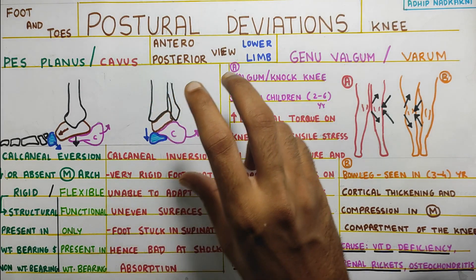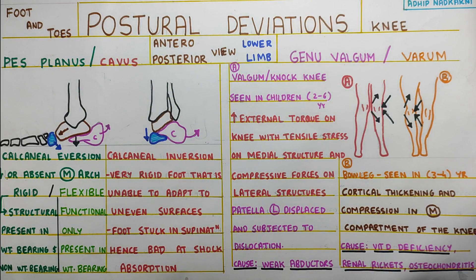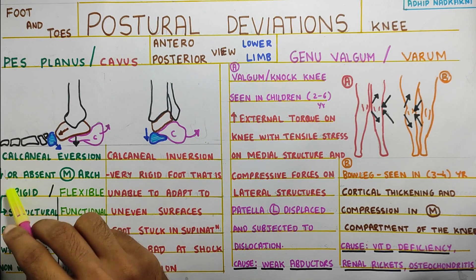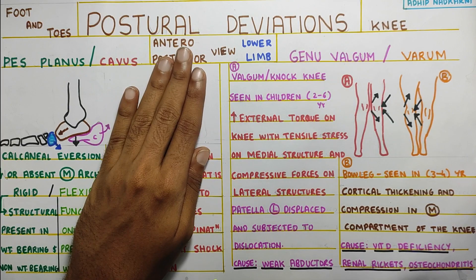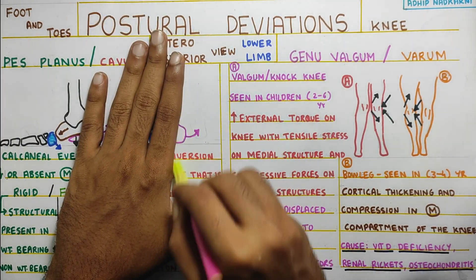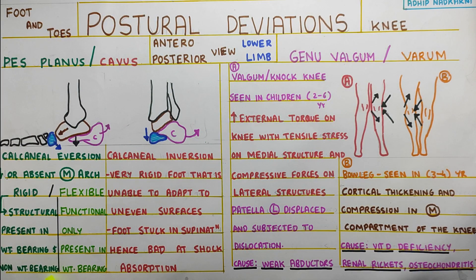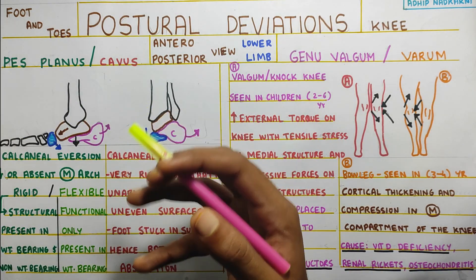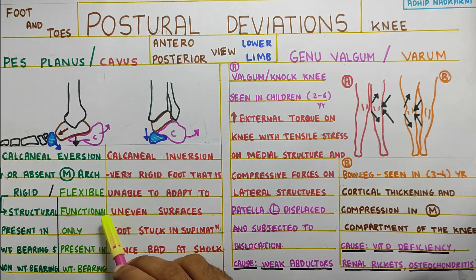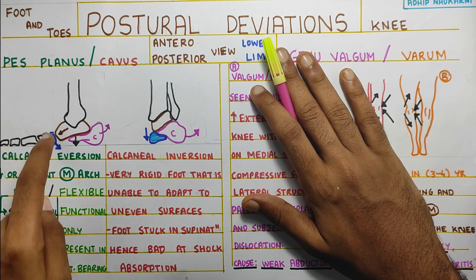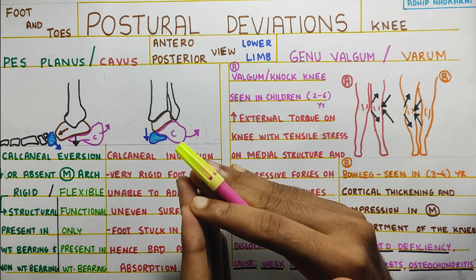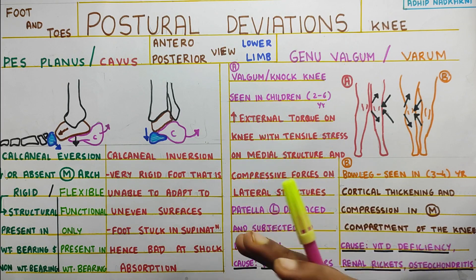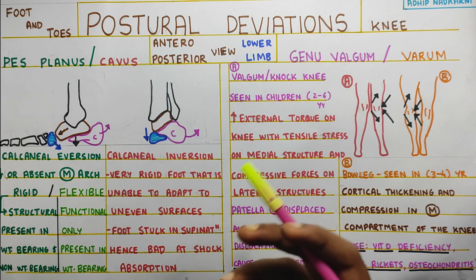Visually, when the calcaneum goes for eversion, the navicular drops. There are two types of flat foot: rigid and flexible. In rigid flat foot, it is a structural problem present at both weight bearing and non-weight bearing. Whereas a flexible one is more of a functional flat foot — meaning only when you are weight bearing will the navicular drop. In the non-weight bearing position, the foot will have a nice arch and look totally normal.